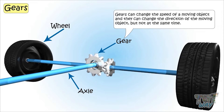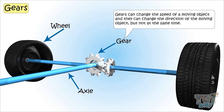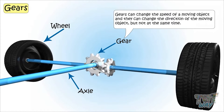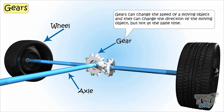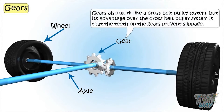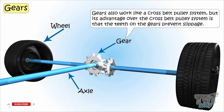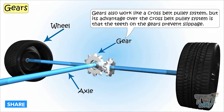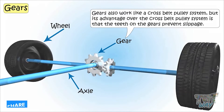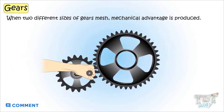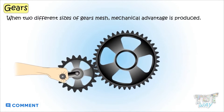Gears can change the speed of moving objects. Gears can change the direction of moving objects too, but not both at the same time. Gears also work like a cross belt pulley system, but with an advantage: the teeth on the gears prevent slippage. When two different sizes of gears mesh, mechanical advantage is produced.